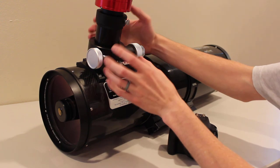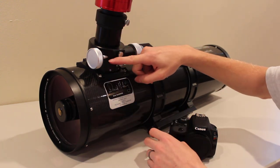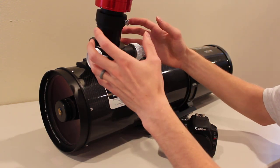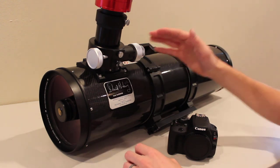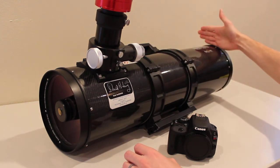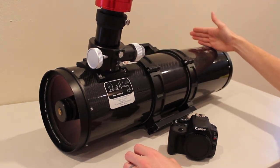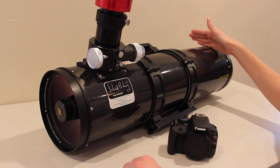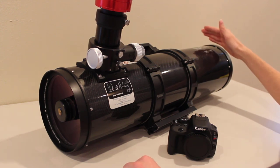Number one, you can get a lower profile focuser. Maybe it only comes out to here and maybe that's enough travel to get you focus. The second method is you can actually move your primary mirror forward. Now that's a modification that most people don't want to do, including myself.